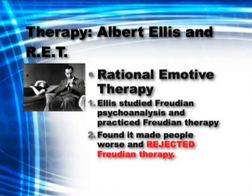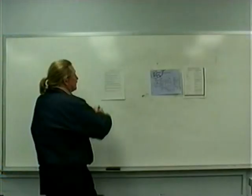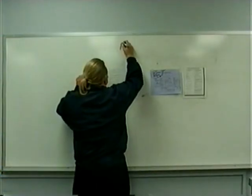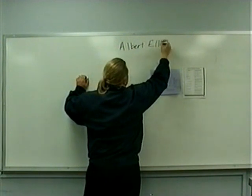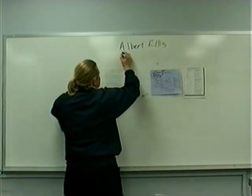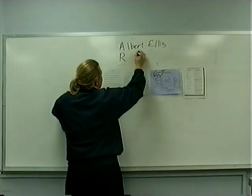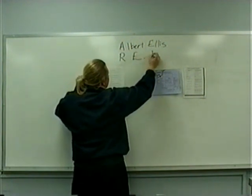He took Freud's ideas to heart and tried to follow those in his therapy. And what he found was that they just didn't work very well. So this is Albert Ellis, trained in Freudian psychoanalysis, and in response he developed rational emotive therapy.